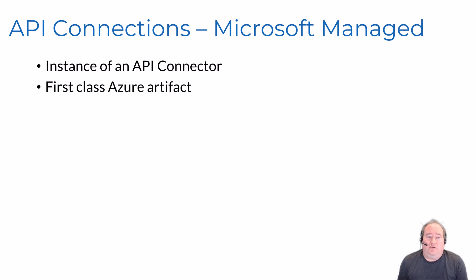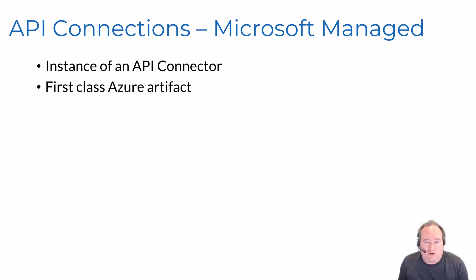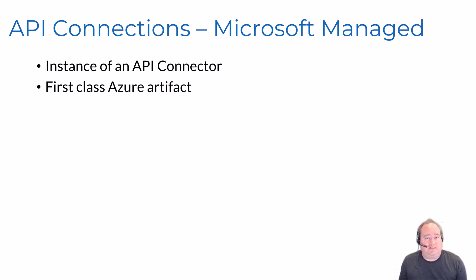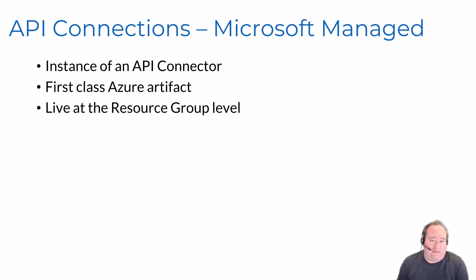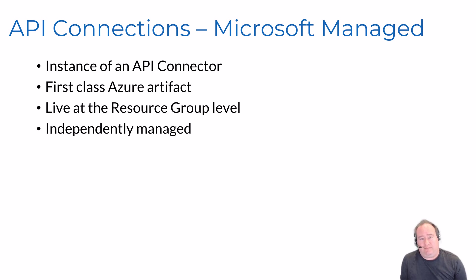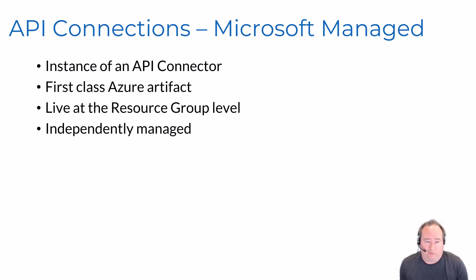Connections are first-class Azure artifacts, which means they're fully accessible through the portal. While they feel like they belong to a logic app and are generally created inside one, they very much are not the sole property of that logic app. They live at the resource group level, so they can be shared across many logic apps inside that resource group and independently managed - you can go into API connections in the portal and make changes independent of your logic apps.